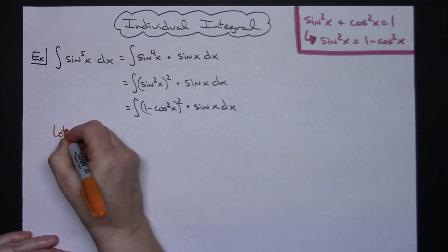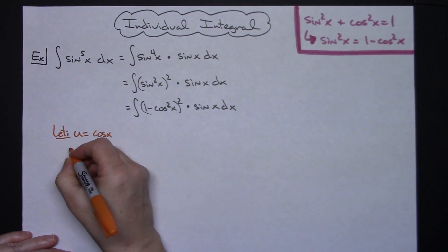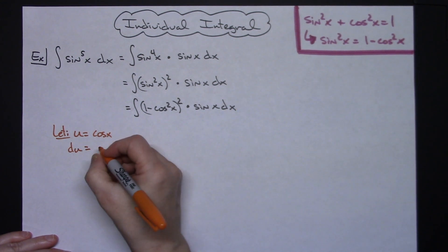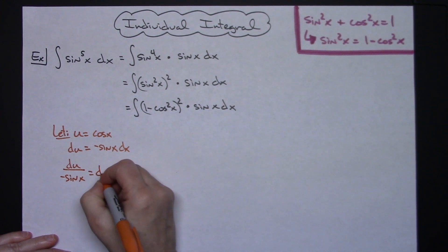Over here we'll do let u equal cosine x. Taking the derivative will be du equals minus sine x dx and then solving for that dx will have du over minus sine x equaling that dx.